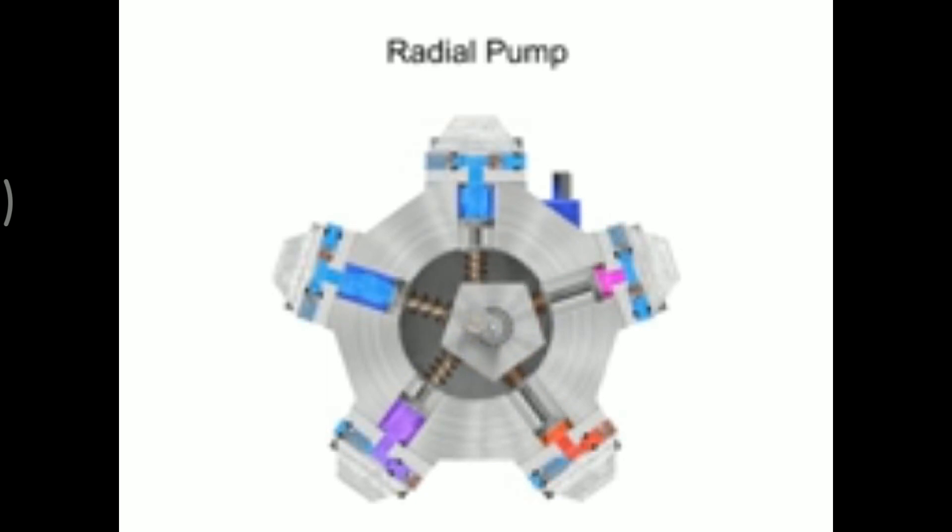As the shaft rotates, the cam moves towards the pistons, forcing them down into the cylinder block and discharging the fluid. As the cam moves away, springs help retract the piston and cause the intake stroke. Check valves ensure that fluid only enters the inlet ports and only exits the outlet ports.